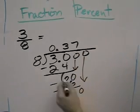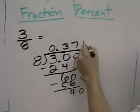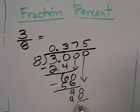Add 1 final 0, 8 goes into 40, 5 times, that's 40 with nothing left over.